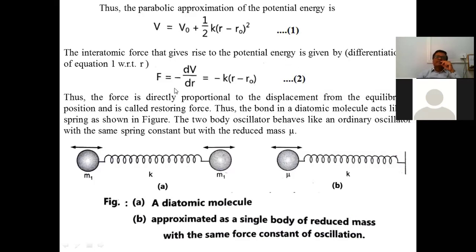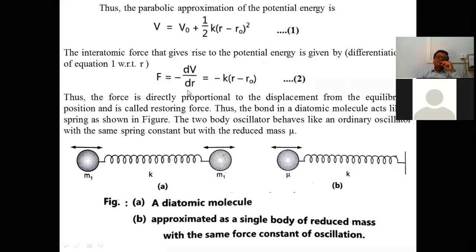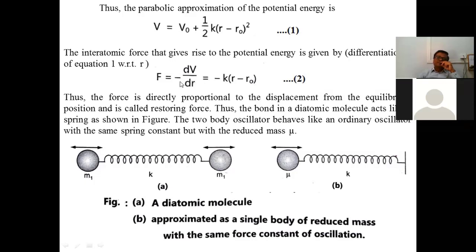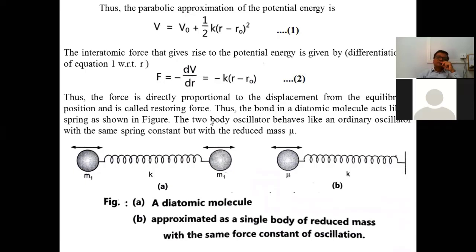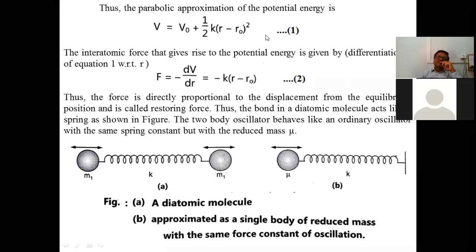The interatomic force that gives rise to the potential energy is given by F = −dV/dr, where V is the potential energy. This means if distance r increases, the potential energy decreases, and if distance r decreases, the potential energy increases — this indicates the negative sign. When r is less than r0, the potential energy increases, and when r is greater than r0, the potential energy decreases.